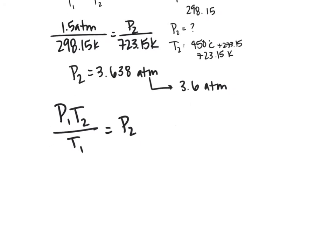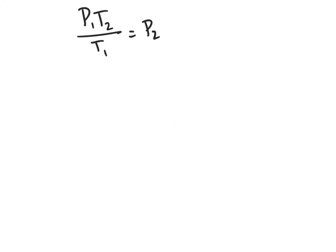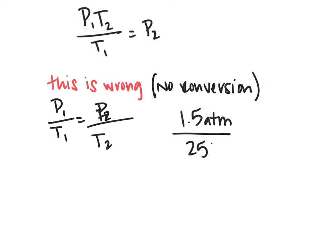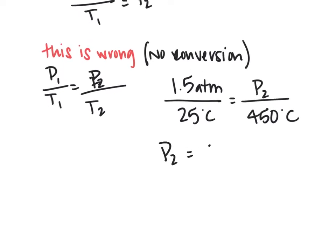You might ask whether you could just plug in Celsius values since the units cancel. I'm going to mark this in red as wrong. If you set up 1.5 atmospheres divided by 25 degrees Celsius equals P2 divided by 450 degrees Celsius, you get P2 equals 27 atmospheres — which is incorrect.